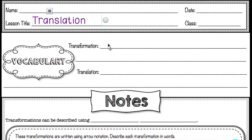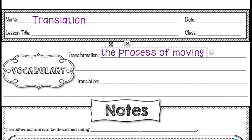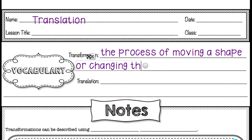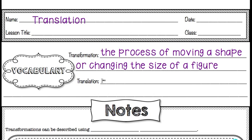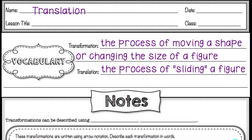Let's start with a little bit of vocabulary. A transformation is the process of moving a shape or changing the size of a figure. There are several different types of transformations. One of those types is called a translation — a translation is the process of sliding a figure. Other types of transformations include a reflection, a dilation, or a rotation.